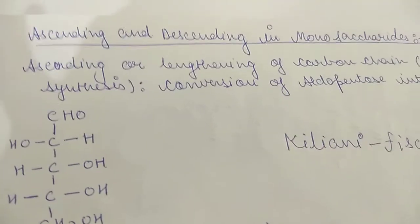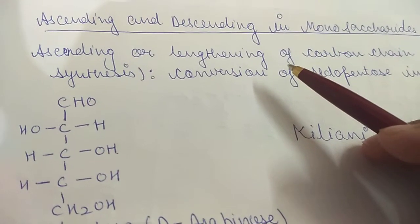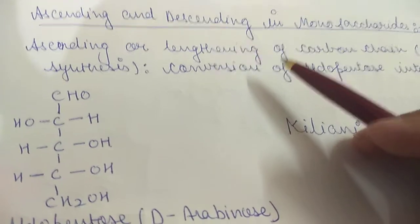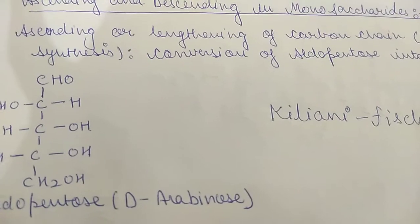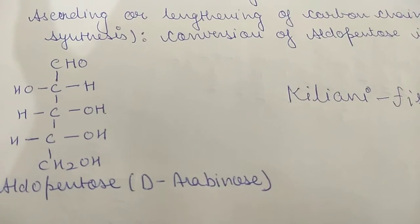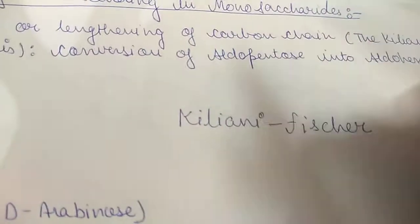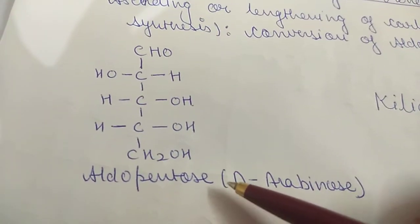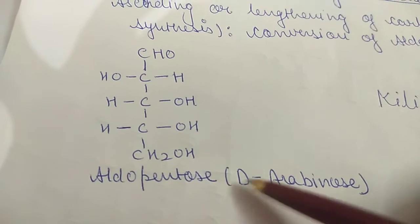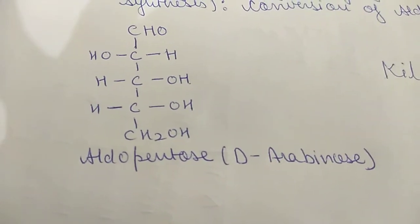We will study ascending and descending in monosaccharides. Ascending and descending means lengthening or shortening of the carbon chain in monosaccharides. First, we will study ascending or lengthening of the carbon chain, and we will take the example of a synthesis called Kiliani-Fisher synthesis, named after the scientists. We will carry out the conversion of aldopentose into aldohexose, taking D-arabinose as our example.